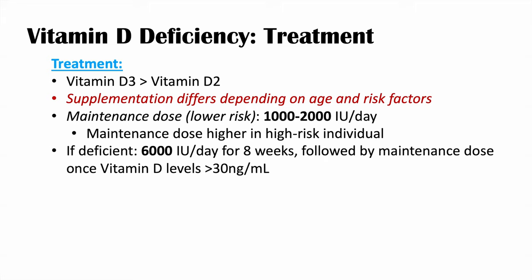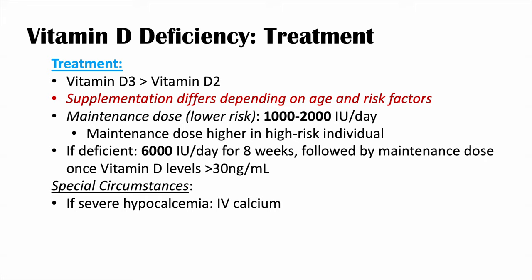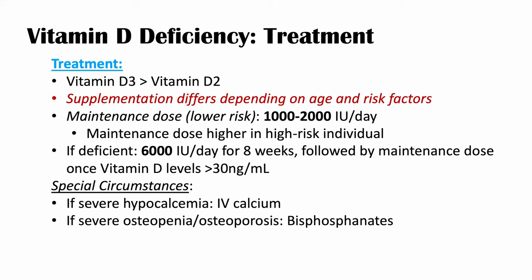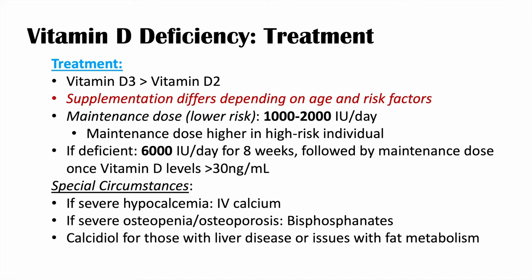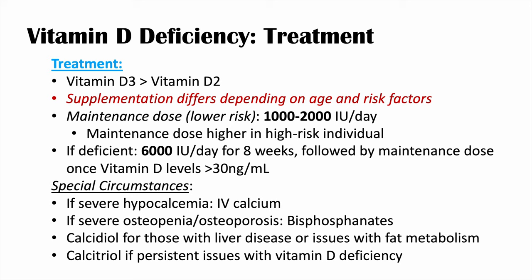This is a very complicated topic. In special circumstances — if vitamin D deficiency has led to severe hypocalcemia with symptoms — IV calcium is given. For severe osteopenia or osteoporosis, bisphosphonates are also given. In patients with liver disease or issues metabolizing fat, calcidiol (25-hydroxyvitamin D) is given, since they may not be able to add the first hydroxyl group in the liver. If there are persistent issues with vitamin D deficiency even after supplementation, calcitriol is given, bypassing both the liver and kidney modification steps.